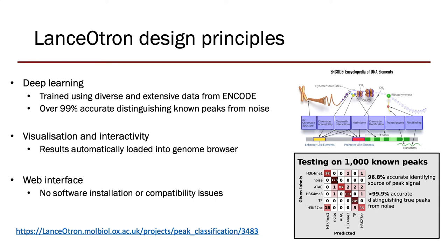Deep learning has been shown to outperform humans when it comes to things like image classification or pattern recognition. So we applied it to peak calling in concert with traditional statistical testing. In this way, Lancetron assesses more than just the height of a peak — it considers the actual shape of the region. Benchmarking has shown it to be extremely accurate at identifying known peaks, over 99% accuracy.